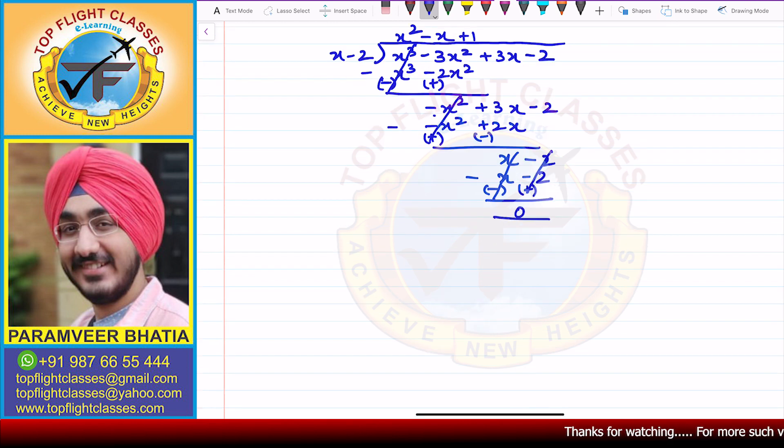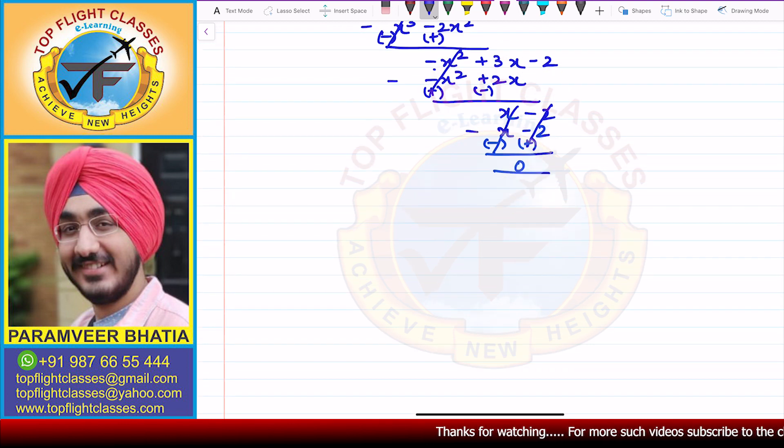So the answer to the question, that is x² - x + 1, that is equal to g(x) in this case. So g(x) = x² - x + 1, and that is what is required in this question.